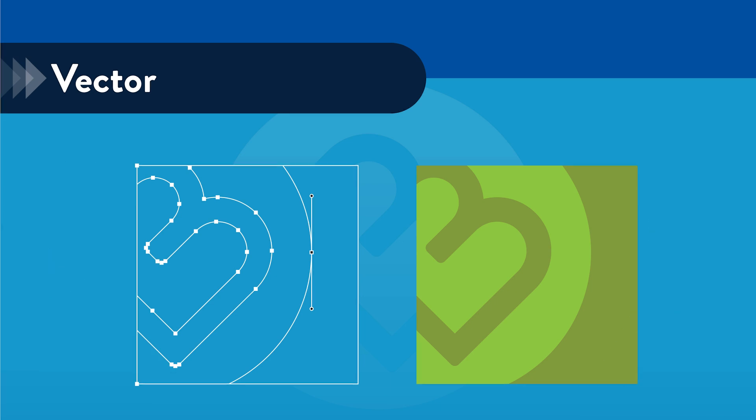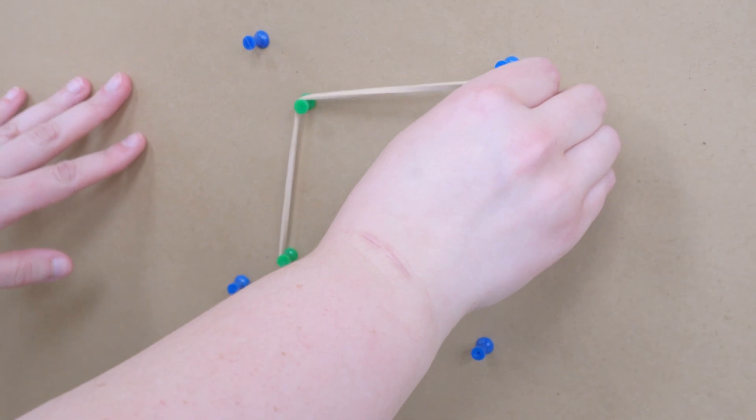Let's start with vector images. Vector images are made up of points defined by mathematical equations. These points can be used to assemble simple lines, curves, and shapes just like the set of pins guiding the rubber band.